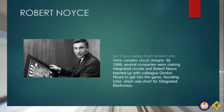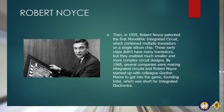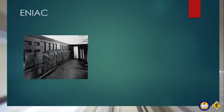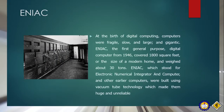So, who is Robert Noyce? In 1959, Robert Noyce invented the first monolithic integrated circuit, which combined multiple transistors on a single silicon chip. These early chips didn't have many transistors but they enabled much smaller and more complex circuit designs. By 1968, several companies were making integrated circuits and Robert Noyce teamed up with a colleague Gordon Moore to found Intel, which was short for Integrated Electronics. ENIAC, the first general-purpose digital computer from 1946, covered 1,800 square feet — the size of a modern home — and weighed about 30 tons. ENIAC, which stood for Electronic Numerical Integrator and Computer, and other early computers were built using vacuum tube technology, which made them huge and unreliable.